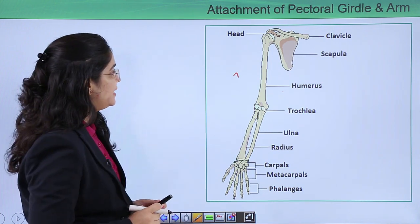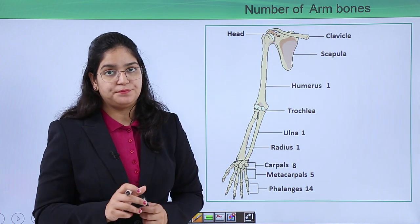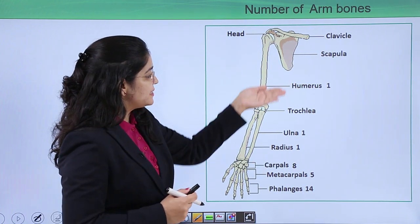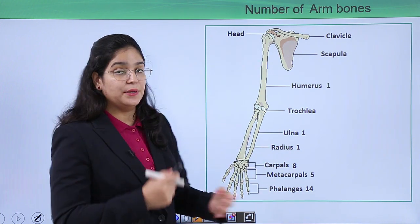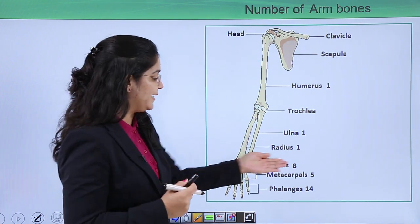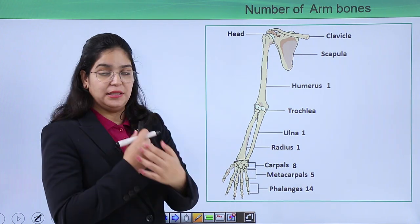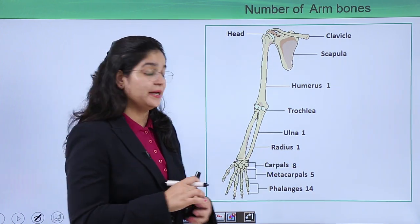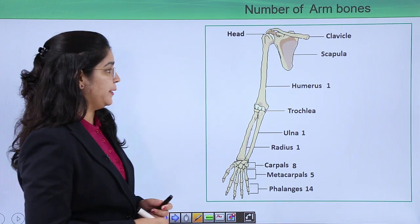Let's learn about the numbers. The humerus is one, the radius is one, the ulna is one. The carpal wrist bones are eight in number, the metacarpal palm bones are five in number, and the phalanges are fourteen in number.